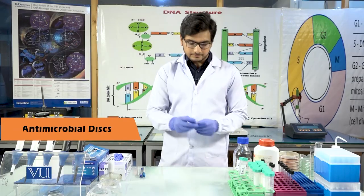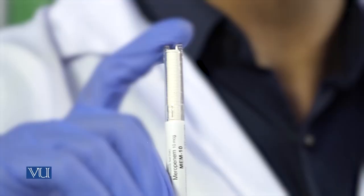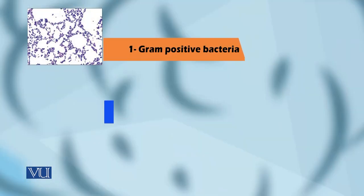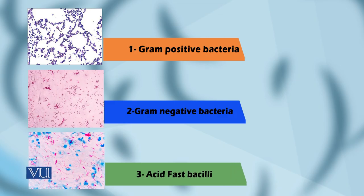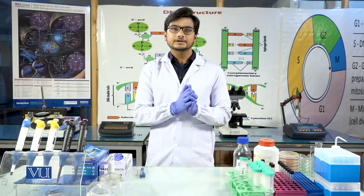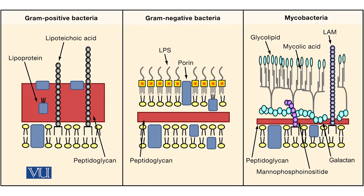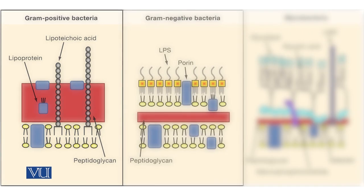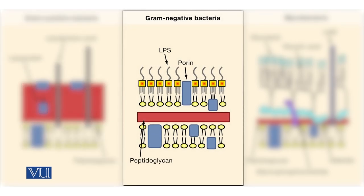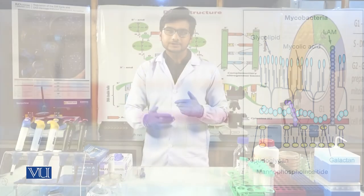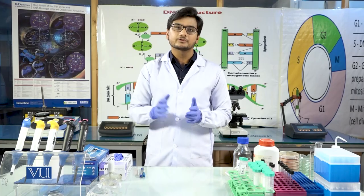Number two material is antimicrobial discs. These are antimicrobial discs used for this purpose. These discs are present in different concentrations for different bacteria. There are three types of bacteria: number one is gram-positive bacteria, number two is gram-negative bacteria, and number three is acid fast bacilli.